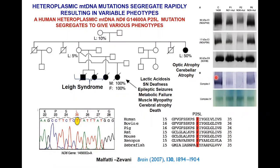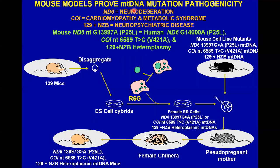Another disease mutation is a missense mutation in the complex I ND6 gene — changing amino acid 25 from proline to leucine, a proline highly conserved across species. This pedigree was originally published by Massimo Zeviani. One patient with 50% mutant mtDNA in her blood had optic atrophy and cerebellar ataxia. Her sister had only 5% mutant but all her children — from three different consorts — were 100% mutant and died of Leigh syndrome. This shows how rapidly a heteroplasmic mutation can segregate along the maternal lineage.